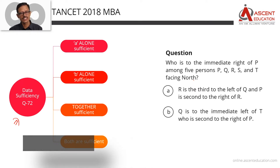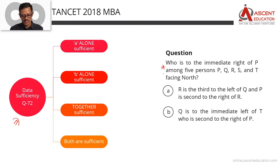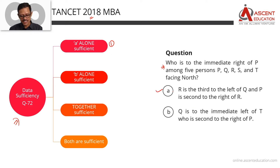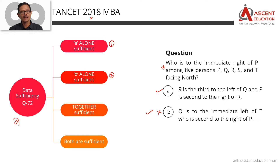In a DS question, there is a question stem followed by two statements. The answer options tell you how those statements relate to answering the question. If Statement A alone is sufficient and B is not, we go with option 1. If Statement B alone is sufficient and A is not, we go with option 2.